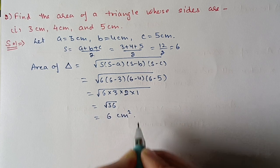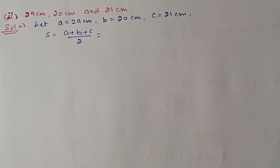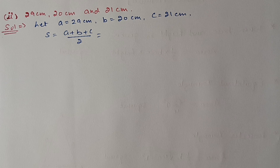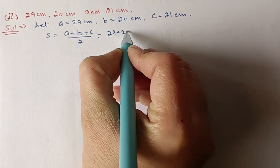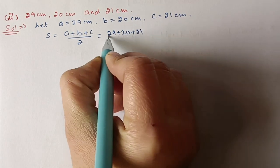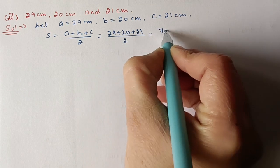Next, the second part of question two: sides are 29 cm, 20 cm, and 21 cm. Here we will also use Heron's formula. First, find the semi-perimeter: s = (29 + 20 + 21)/2 = 70/2 = 35.